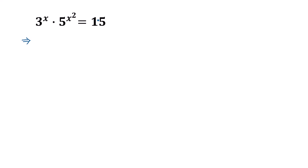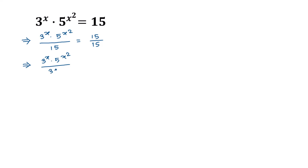Dividing both sides by 15, we can write the left side: 3 to the power x times 5 to the power x squared, divided by 15, is equal to 15 divided by 15. We can write 15 as 3 times 5, so the right side becomes 1.